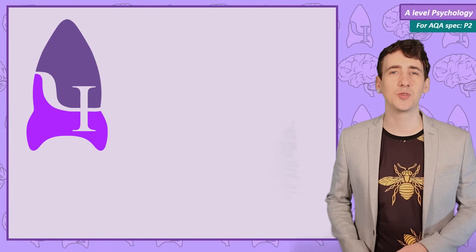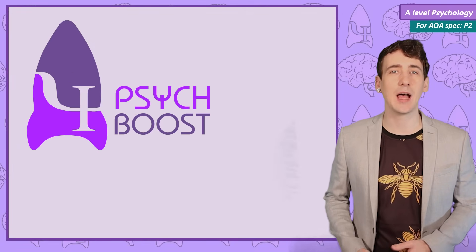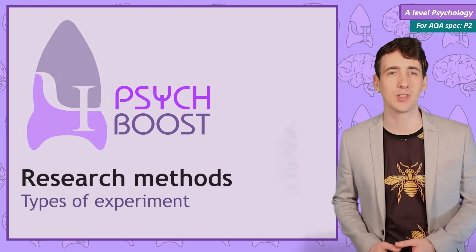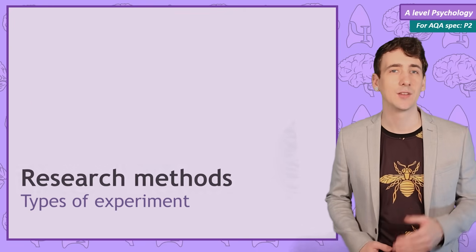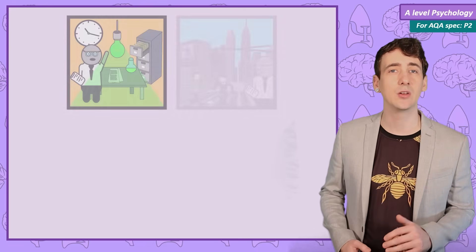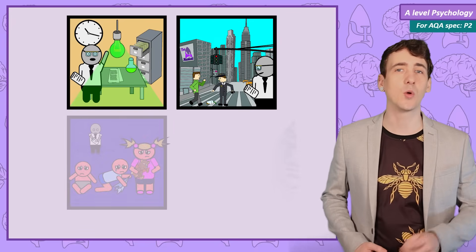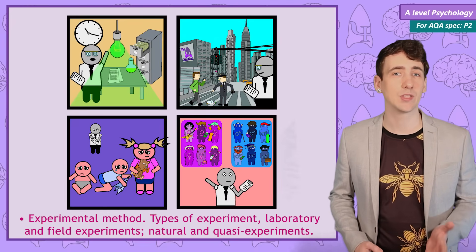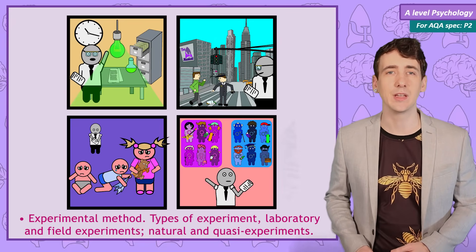In this first psychological research methods video, I'm going to discuss the different types of experiments — lab, field, natural, and quasi — and discuss the strengths and weaknesses of each.